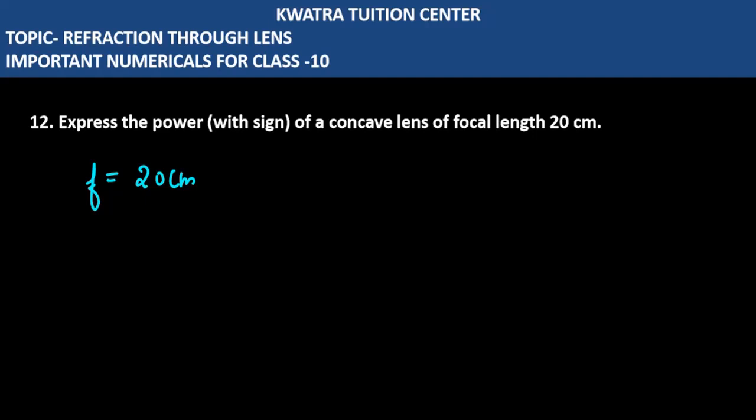Start with a new question which is question number 12. It says express the power with sign of a concave lens of focal length 20 centimeter. So first of all, you have to convert the focal length into meters which will be 20 over 100 which is 0.2 meter.